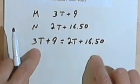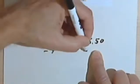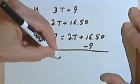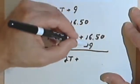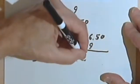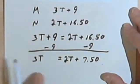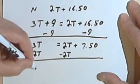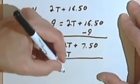We want to get the t's on one side and the numbers on the other. I'm going to subtract 9 from both sides. So now I've got 3t equals 2t plus, let's see, 16.50 minus 9. 16 minus 9 is 7, and I still have that 50 cents, so 7.50. And now I still want to get the t's by themselves. So I'll subtract 2t from both sides. 3t minus 2t is just going to give me t. And these 2t minus 2t cancels and I get 7.50. So the cost of a t-shirt is $7.50.